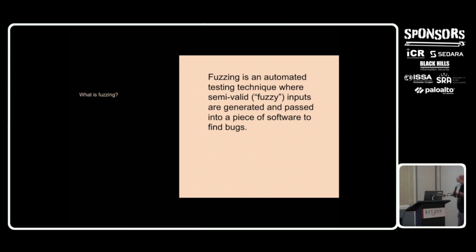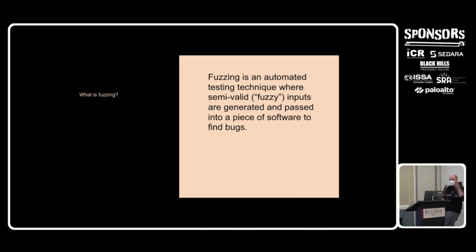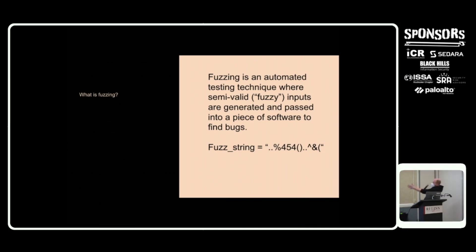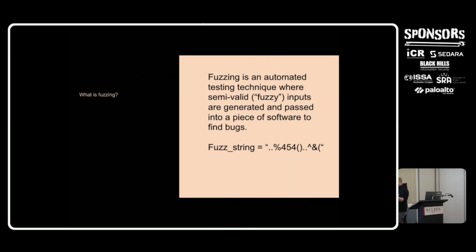So what is fuzzing? Fuzzing is an automated testing technique where you send in semi-valid or quasi-random, fuzzy inputs. These are generated and passed into a piece of software to find bugs or security vulnerabilities. Thinking of things in terms of strings — if you have a string type, this could be a fuzzy input. It's kind of semi-random. You've got some semi-invalid things, like an open bracket. Could that cause some problems? You have special characters mixed in with alphanumeric characters — that's how I think about it.